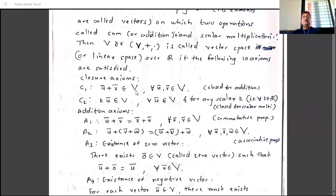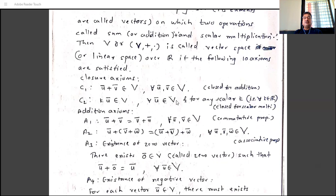The notation for elements of V uses U, V, W — sometimes written with a bar or arrow on top to indicate they are elements of the vector space, distinguishing them from scalars. The bar or arrow is not compulsory; in some books, just U and V are used without any bar. It is written only to distinguish vectors (elements of V) from scalars (elements of R).